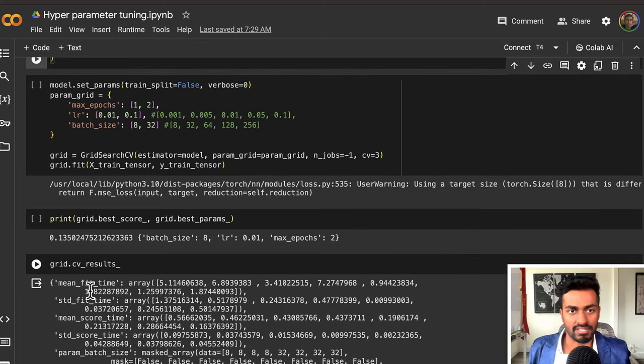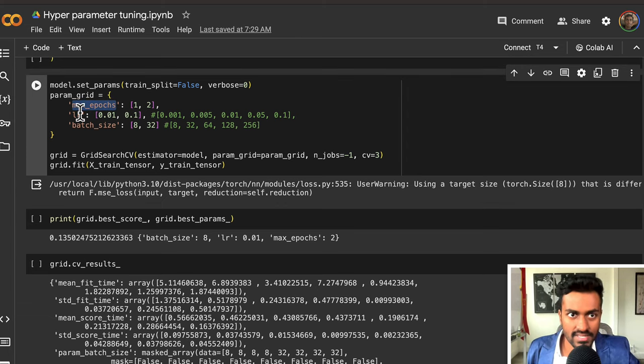Next we actually perform grid search and specifically we want to set some possible values of hyperparameters like max epochs, the learning rate, and the batch size. In my case I think the max epoch should be around one epoch or two epochs. The learning rate should either be 0.01 or 0.1, and the batch size could be 8 or 32.